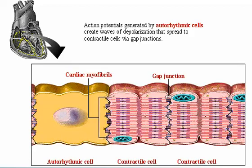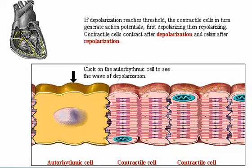In this magnified view of the heart, we see an autorhythmic cell adjacent to several cardiac contractile cells. Action potentials generated by autorhythmic cells create waves of depolarization that spread to contractile cells via gap junctions. If depolarization reaches threshold, the contractile cells in turn generate action potentials, first depolarizing, then repolarizing. After depolarization, the cardiac myofibrils in contractile cells slide over each other, resulting in muscle contraction.